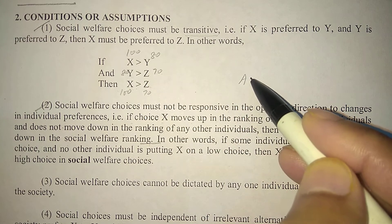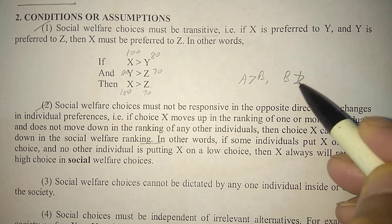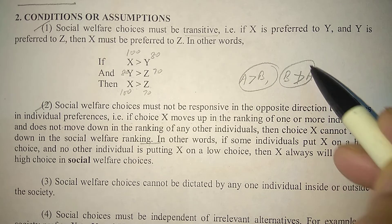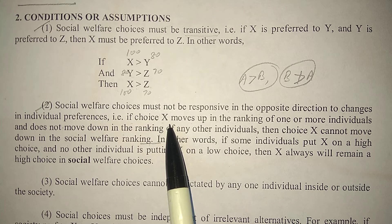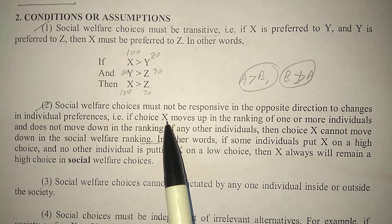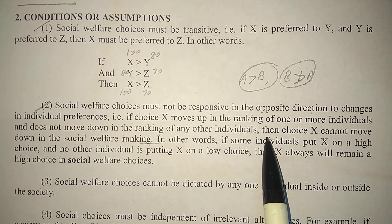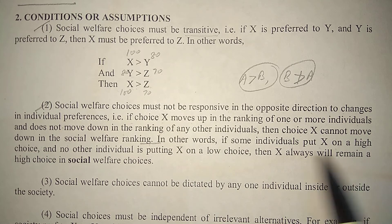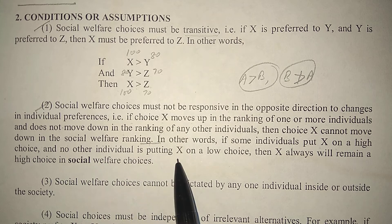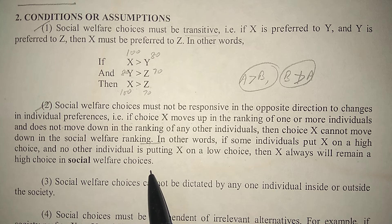If A is greater than B, then B cannot be greater than A. This is the consistency assumption: if A > B, then B cannot be greater than A. In other words, if some individuals put X on a high choice and no other individual is putting X on a low choice, then X will always remain a high choice in social welfare choices.